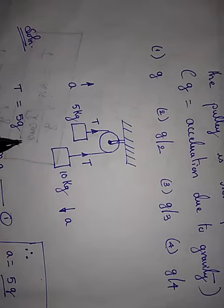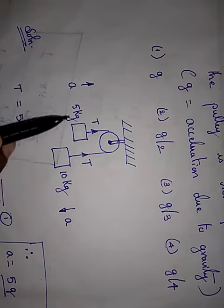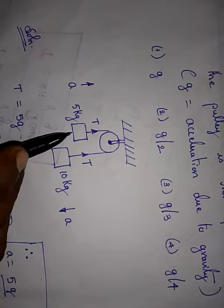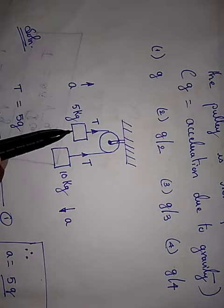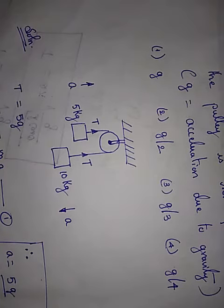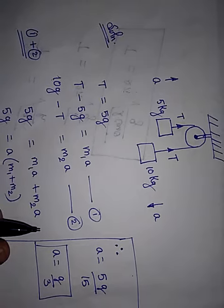So T minus 5G, this T and we have tension and we have 5 kilogram acting downwards. But it will be moving in this direction. So T minus 5G is equal to mass into acceleration, M1 into A. Here we have 5 kilogram.